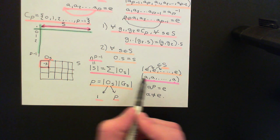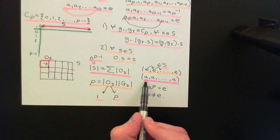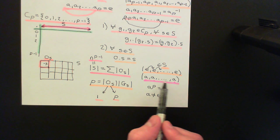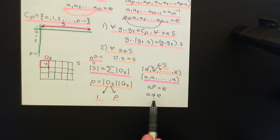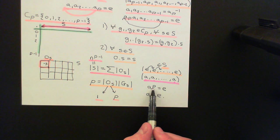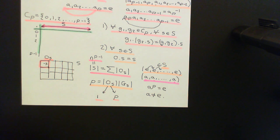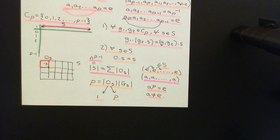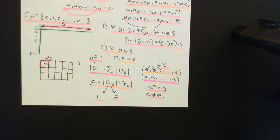That proves there must be other P-tuples where all entries are the same element of the group, and that element is no longer the identity. So we've found another element of the group that, when placed in all P sockets, satisfies A^P equals the identity. Hence we've proven the existence of elements of the group besides the identity which, when raised to the power of P, equal the identity. We've proven Cauchy's theorem: if you have a group of order a multiple of P, there exist elements in that group of order P, generating a cyclic subgroup of order P — the prime which divides the order of the group.